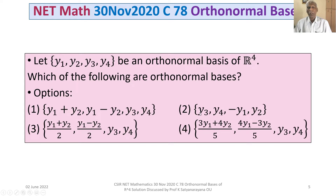Option 2 is the set consisting of y3, y4, minus y1, y2. Option 3 is the set consisting of (y1 plus y2)/2, (y1 minus y2)/2, y3, y4. Option 4 is the set consisting of (3y1 plus 4y2)/5, (4y1 minus 3y2)/5, y3, y4.